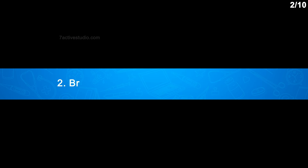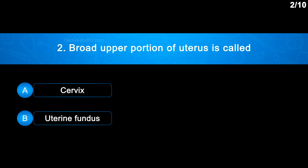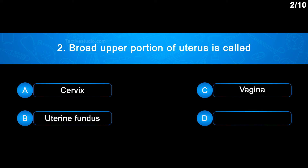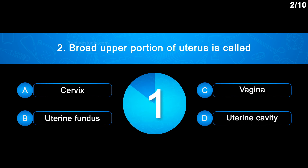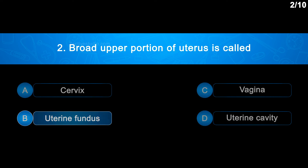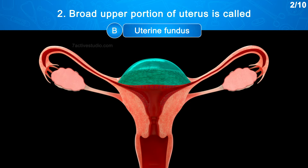Question No. 2: The broad upper portion of the uterus is called — Option A: Cervix, Option B: Uterine fundus, Option C: Vagina, Option D: Uterine cavity. The correct answer is Option B: Uterine fundus. The uterine fundus is the top portion of the uterus.